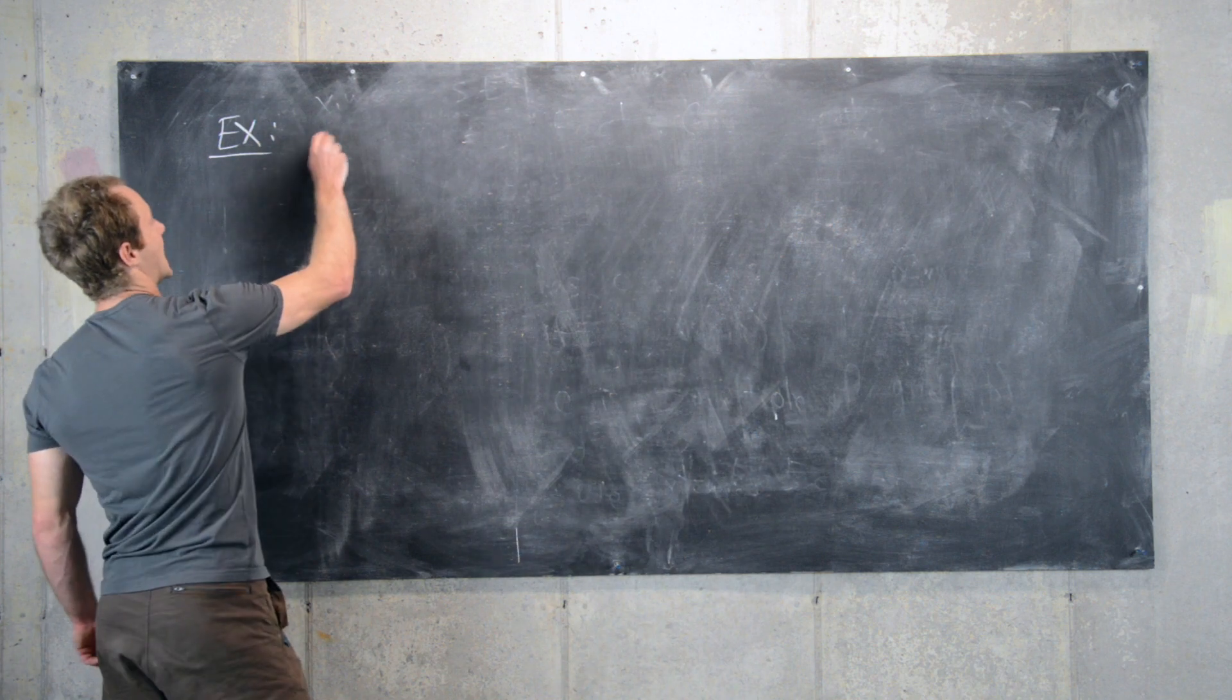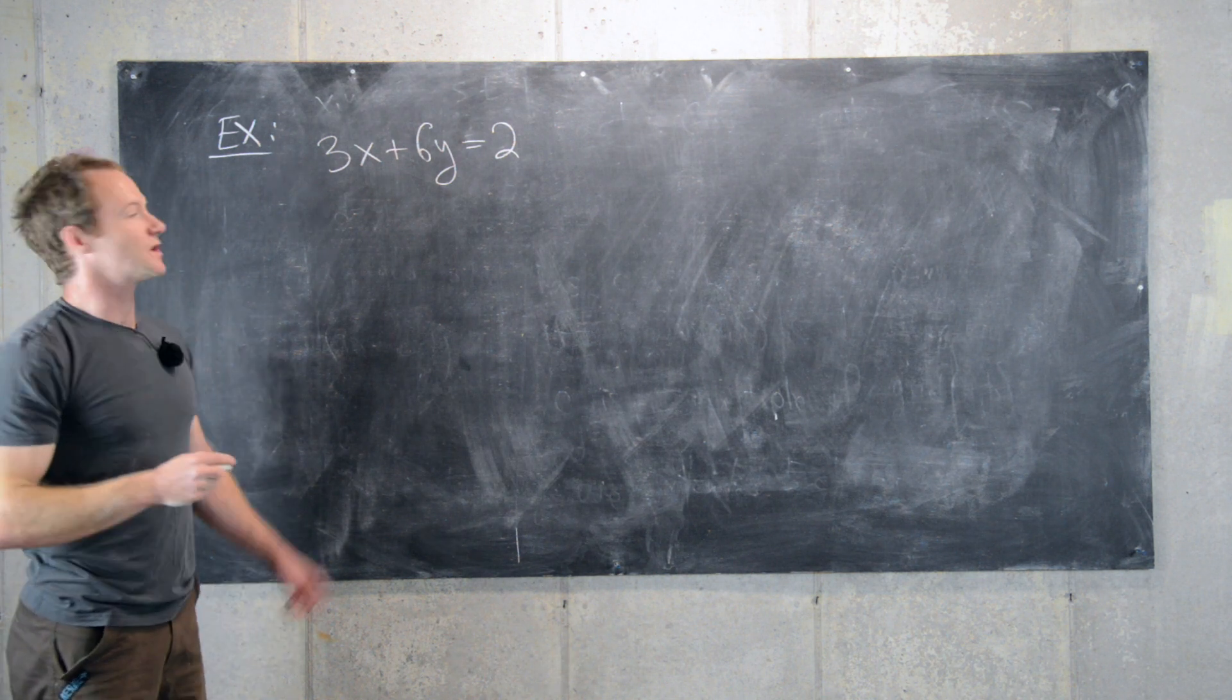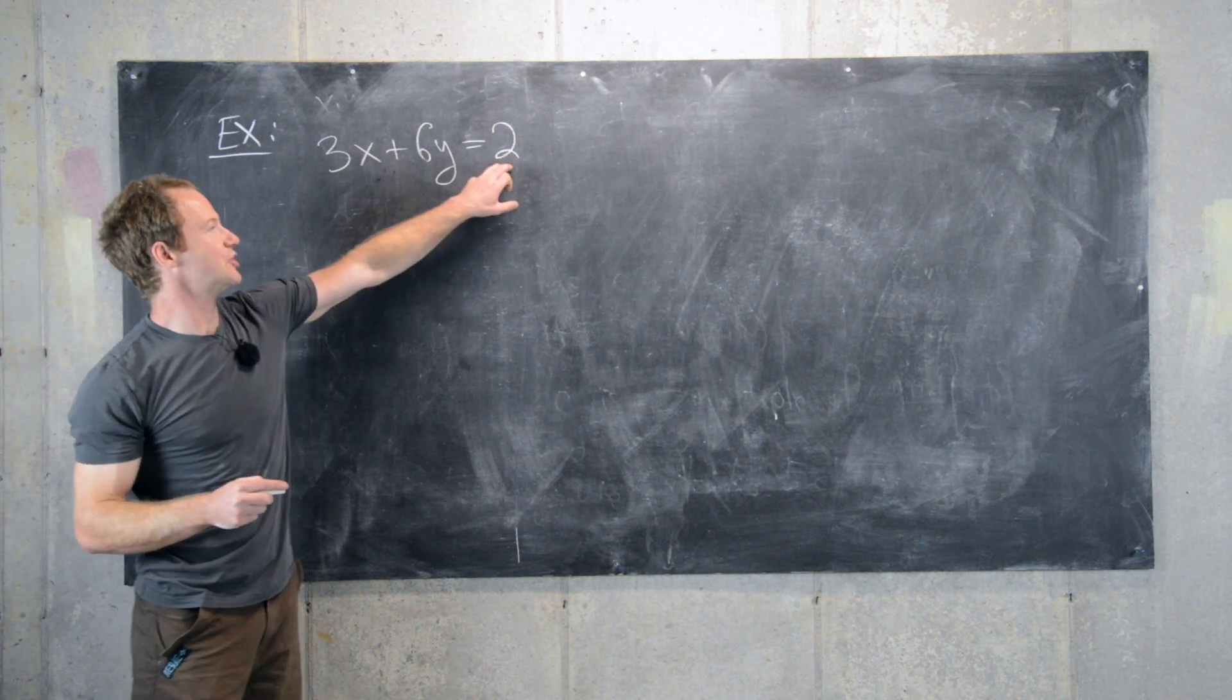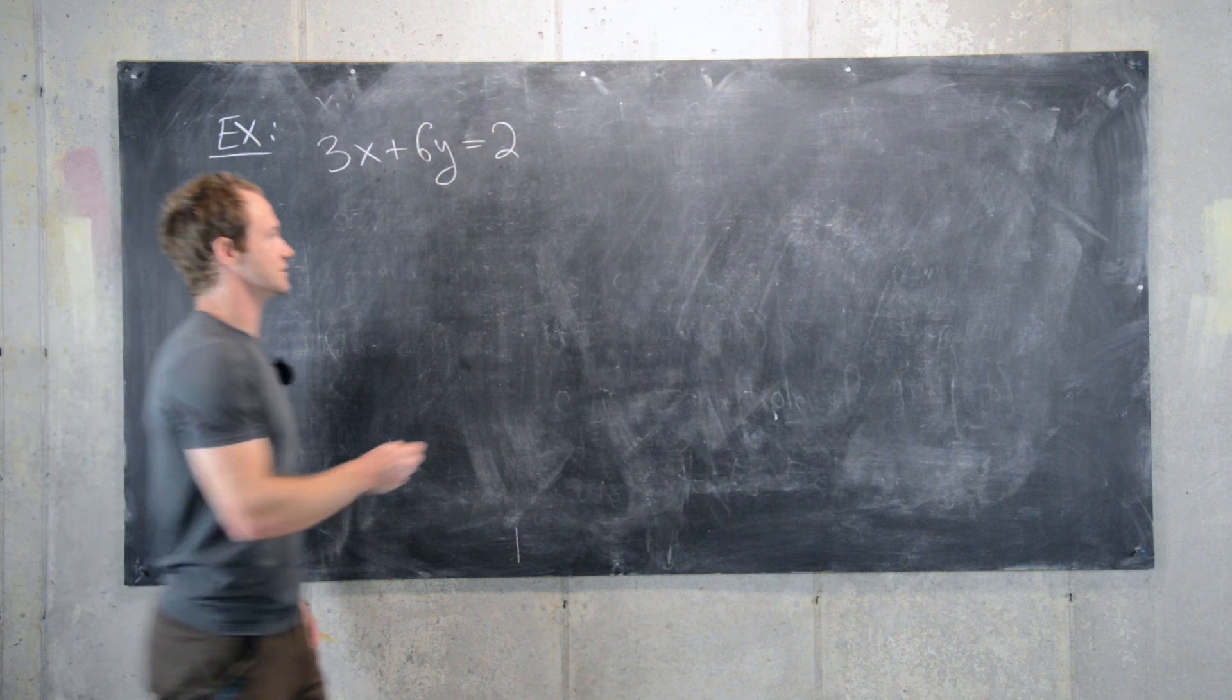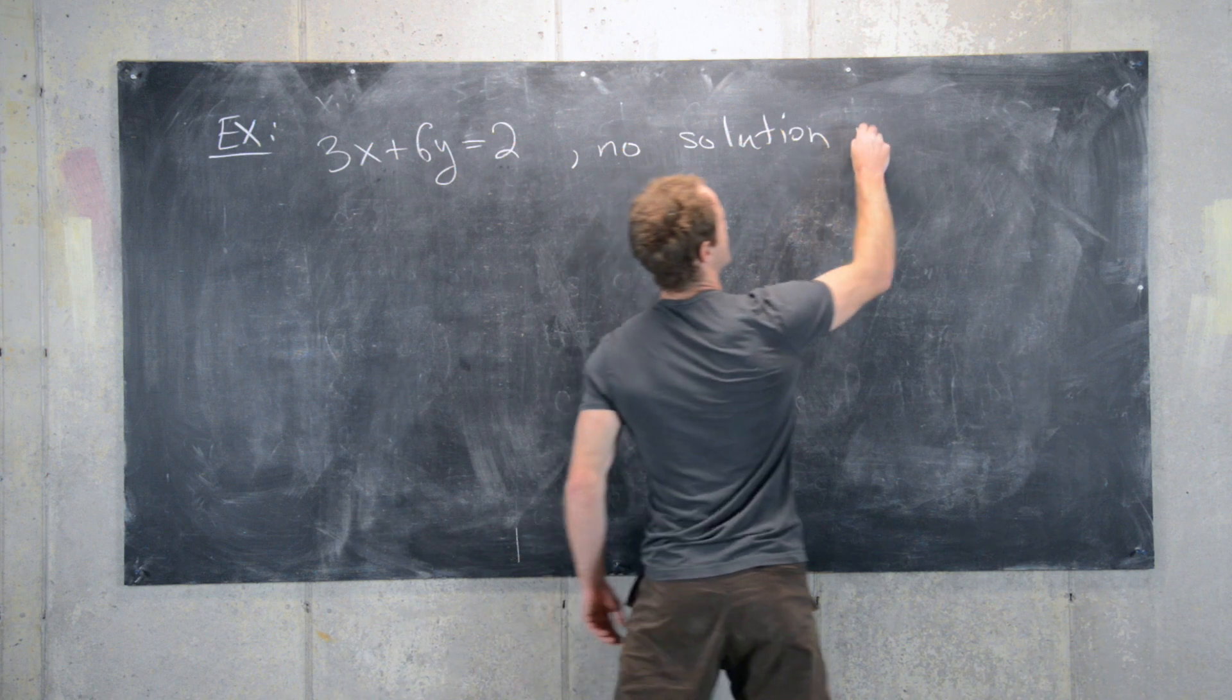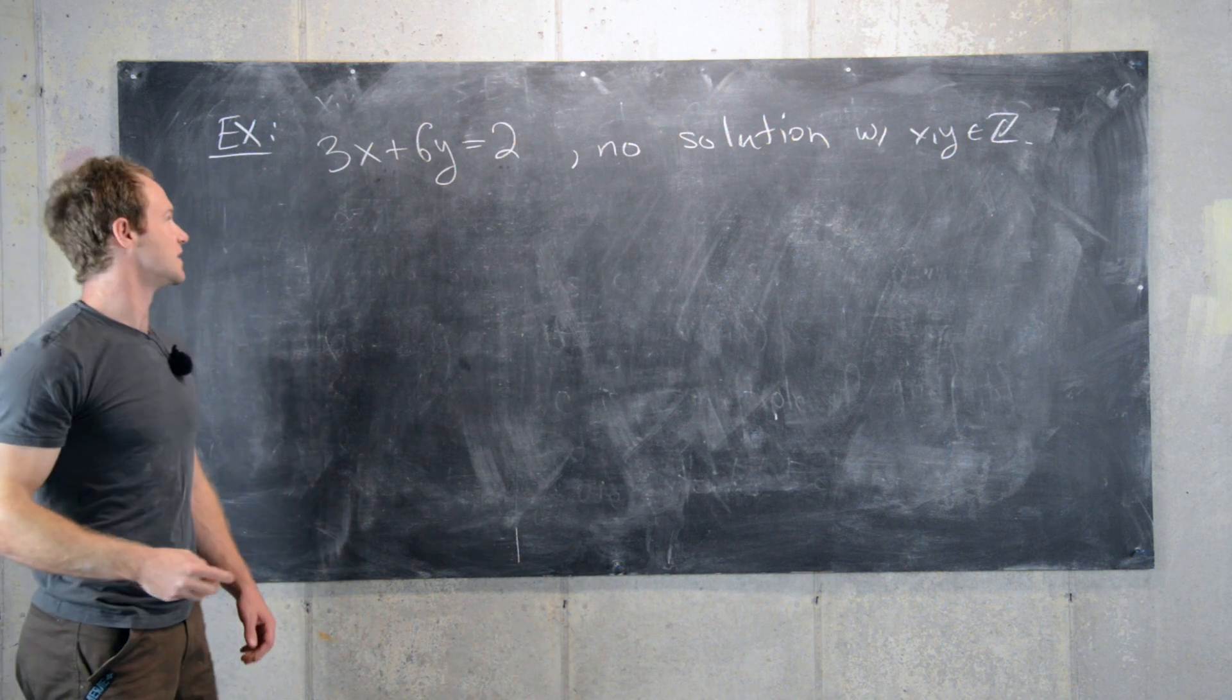Let's first look at 3x plus 6y equals 2. Recall this has a solution if and only if 2 is a multiple of the gcd of 3 and 6, but it's not, so there is no solution with x and y in integers.